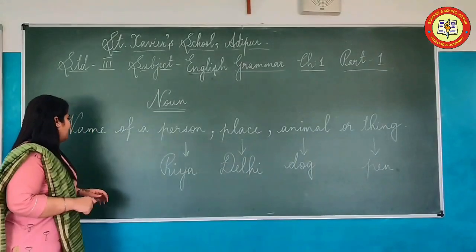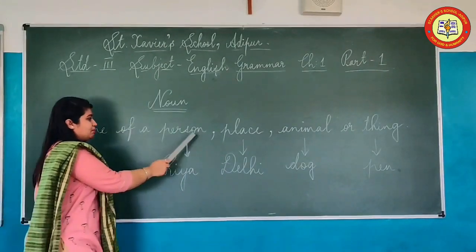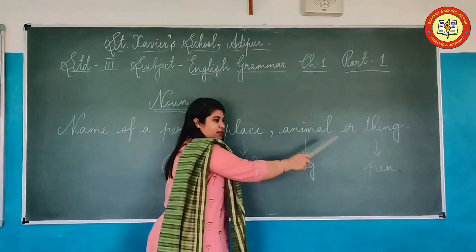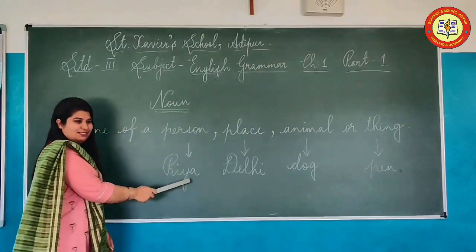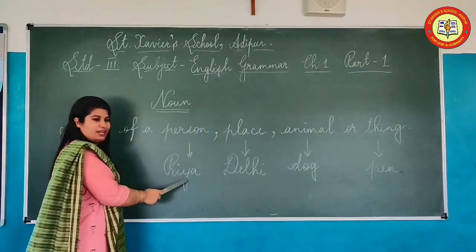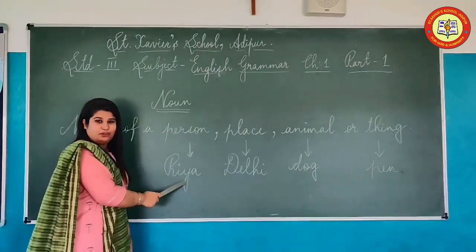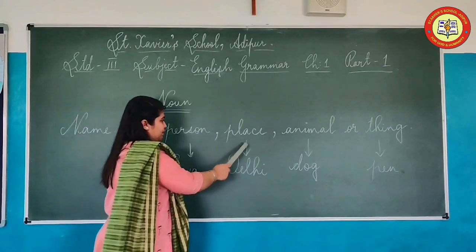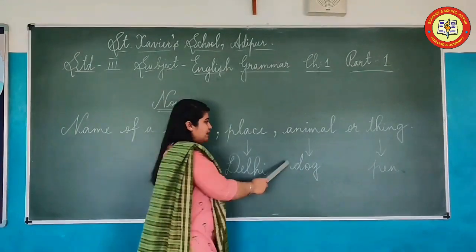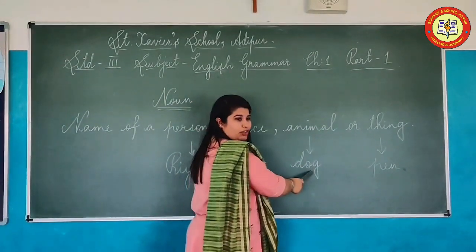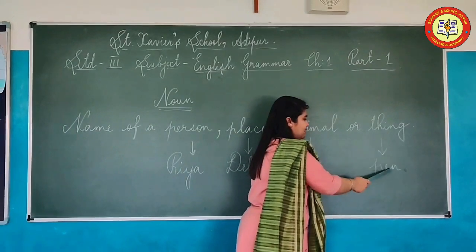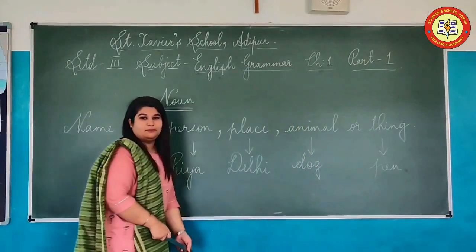So what is a noun? The name of a person, place, animal, or thing. Here are a few examples. An example of a person — you can take the name Ria, that is the name of a girl. Place comes as Delhi. Animal — here is a dog or a cat. And then comes pen, pencil, or anything.